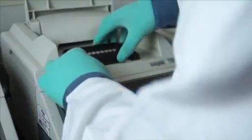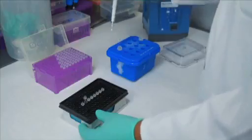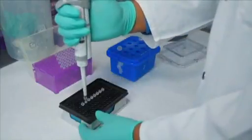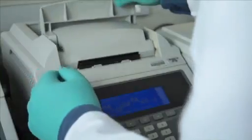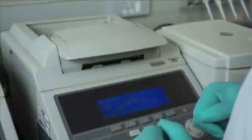Take the tubes out of the thermocycler. Quickly add 0.5 microliters of RNase H to the tubes and return to the thermocycler. Hold at 37 degrees Celsius for 20 minutes and then cool to 4 degrees Celsius.